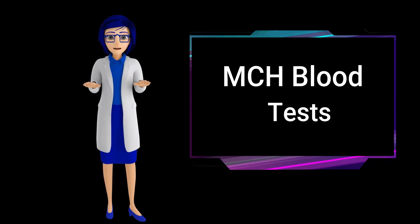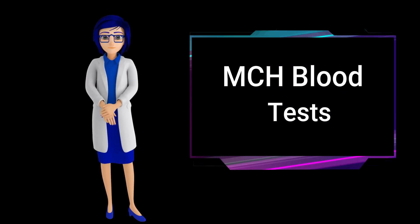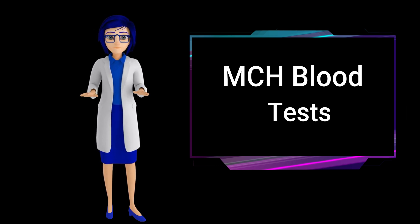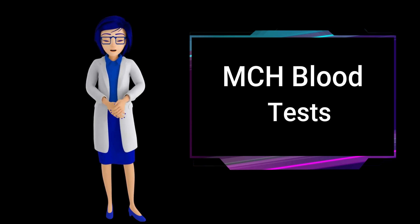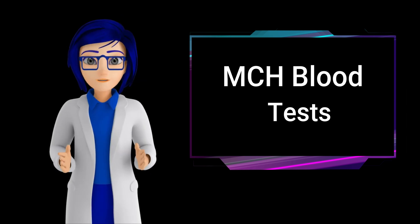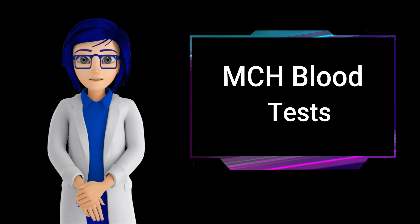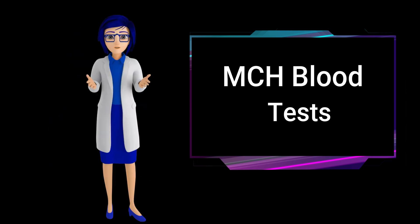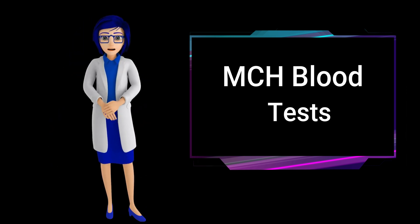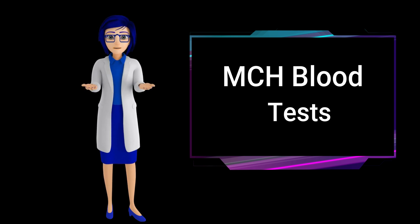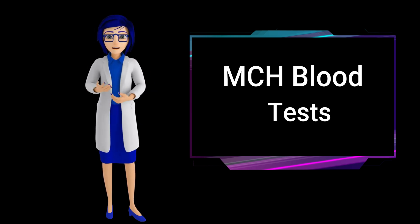MCH is one of three red blood cell indices measuring red blood cell size, color, and hemoglobin content. The other two red blood cell indices are mean corpuscular volume (MCV) and mean corpuscular hemoglobin concentration (MCHC). These three indices can be used together to help diagnose various blood disorders.